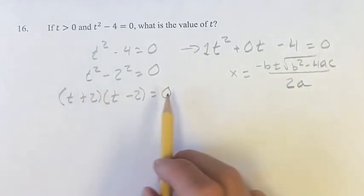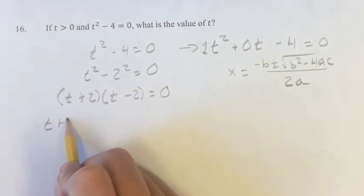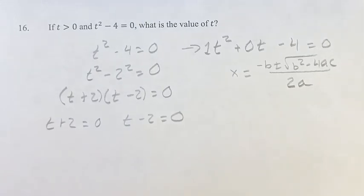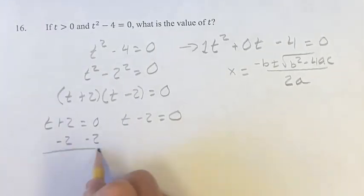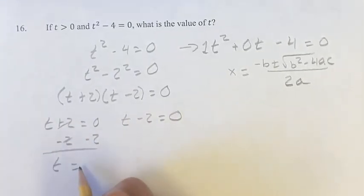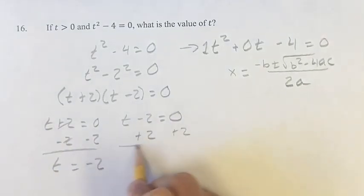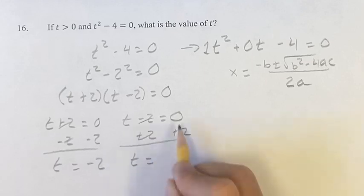So, for this product to be equal to 0, t plus 2 has to be equal to 0, or t minus 2 has to be equal to 0. Subtracting 2 on both sides gives us t is equal to negative 2, and adding 2 for this one gives us t is equal to 2.